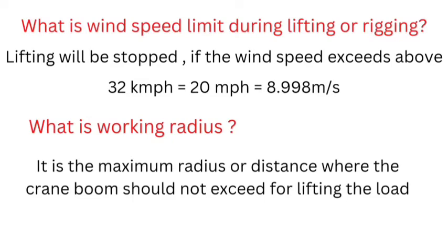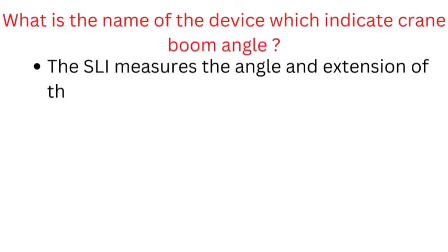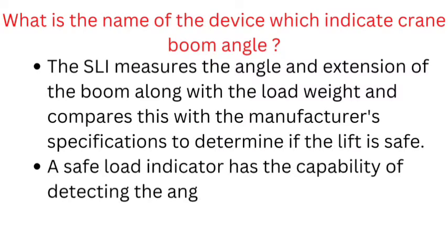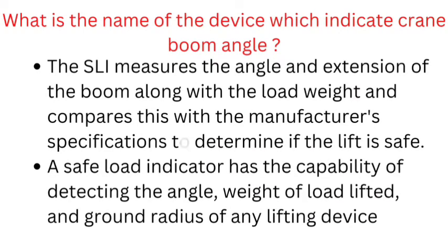What is working radius? It is the maximum radius or distance where the crane boom should not exceed for lifting the load. What is the name of the device which indicates crane boom angle? The safe load indicator measures the angle and extension of the boom, along with the load weight, and compares this with the manufacturer's specifications to determine if the lift is safe. It has the capability of detecting the angle, weight of load lifted, and ground radius of any lifting device.